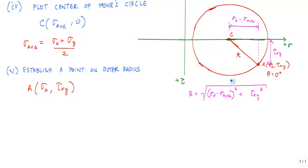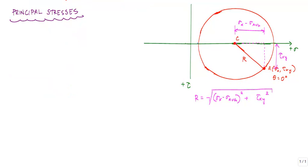And that gives us information associated with how the material is going to fail at that specific location on a structure. The principal stresses are the maximum and minimum normal stresses associated with an element.